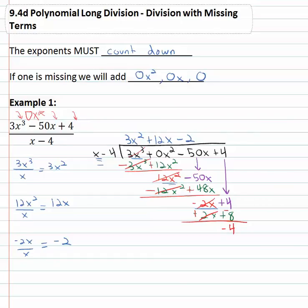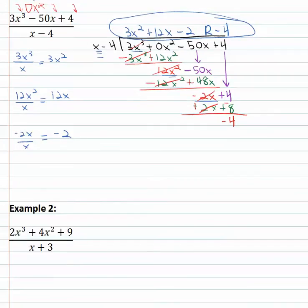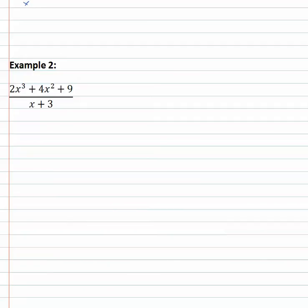Dividing one more time, negative two x divided by x leaves us with negative two. We distribute that negative two, giving us negative two x and positive eight. Changing the signs, the two x terms subtract out to zero and four minus eight gives us negative four. With nothing left to bring down, that negative four becomes our remainder. So if a term is missing we need to remember to add zero of it — zero x squared in this case.